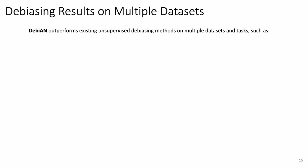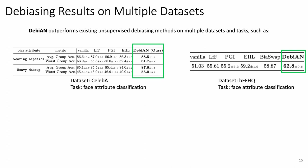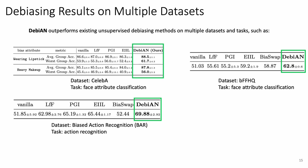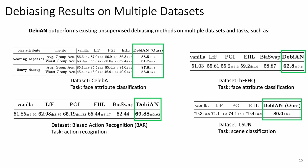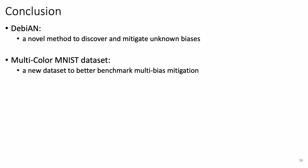Finally, Debian achieves better de-biasing results than previous methods on multiple datasets and tasks, such as face attribute classification on CelebA and BFFHQ datasets, action recognition on BAR datasets, and scene classification on LSUN datasets. In conclusion, we propose Debian, a novel method to discover and mitigate unknown biases. We also construct a Multicolor MNIST dataset to better benchmark multi-bias mitigation.